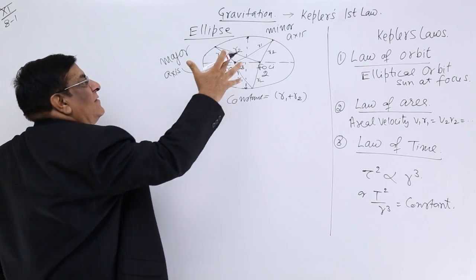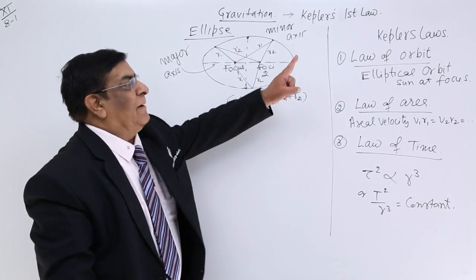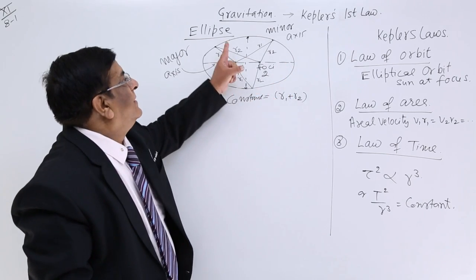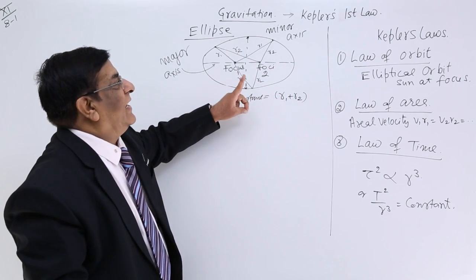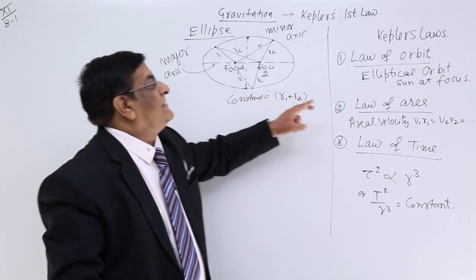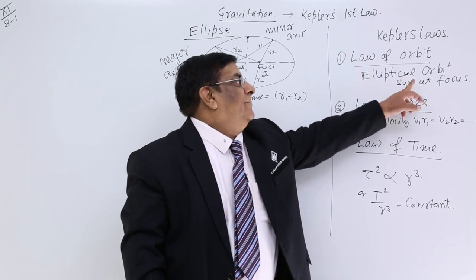That you study in geometry. So what Kepler said is that the orbit of planets around the sun is not a circle, it is an ellipse.